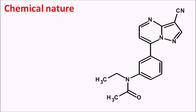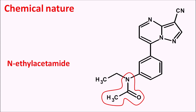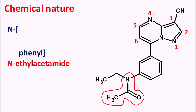This is the structure of Zaleplon. Here we can observe one functional group that is nothing but acetamide with ethyl substitution on the nitrogen. So N-ethyl acetamide is the suffix of the name and it is also having the phenyl group on the nitrogen, so N-phenyl. But to this phenyl ring at the third position it is having a fused heterocyclic ring system. So let us give the numbering: 1, 2, 3, 4, 5, 6, 7.